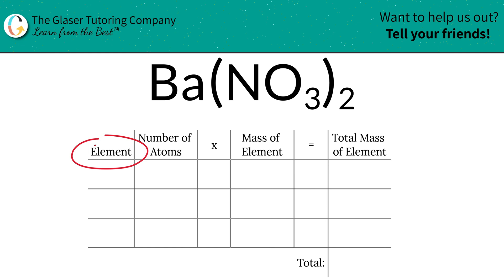The first thing I'm going to do is write the elements I see in the compound. So I see barium, Ba, I see nitrogen, N, and I see oxygen, O.